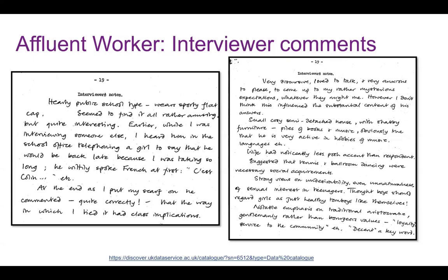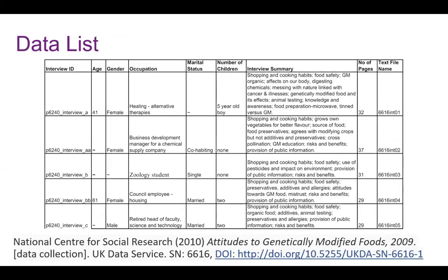The UK Data Archive also curates a data list, which gives an at-a-glance look at participants. It includes basic demographic details about each participant and the file name where you can find the relevant data. While one row might be data level documentation, when you have it all together it becomes project level. These can take a little time to assemble but are really useful organizational tools during research — good practice to create one as you go.